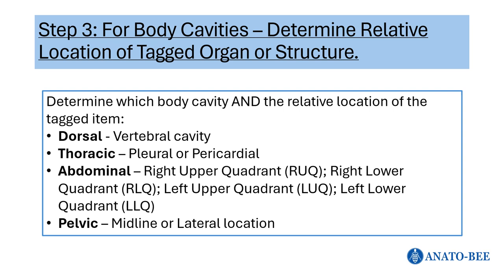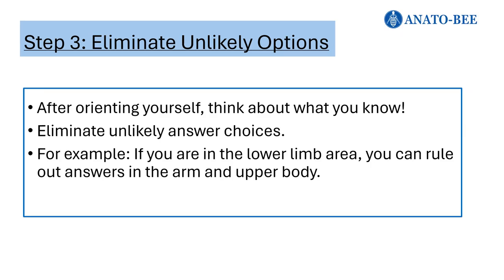Now that you have oriented yourself to the donor body and determined whether the item is on a limb, on the trunk, or within a body cavity, it is important to think about what you know. Some answer choices may seem quite unlikely — for example, some choices may be structures in the upper limb when you are looking at a pinned structure on the lower extremity. Eliminate these unlikely choices quickly to narrow down the possibilities, then focus your attention on the remaining answer choices.